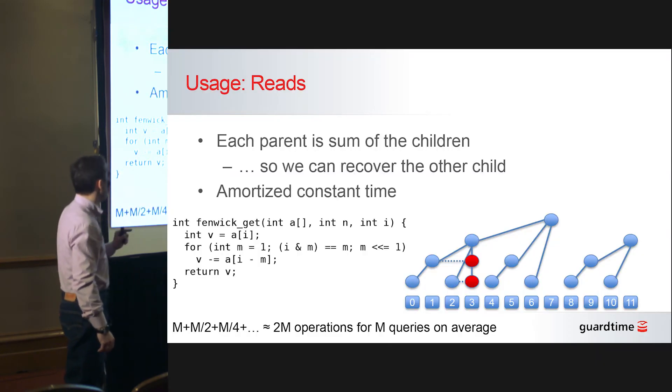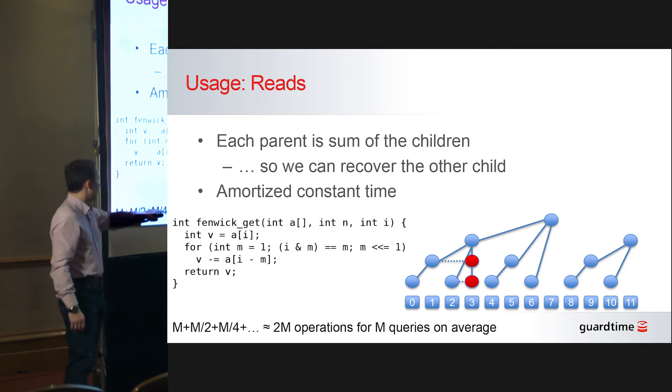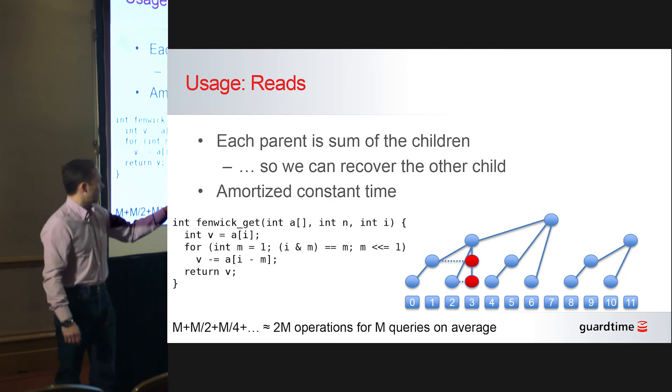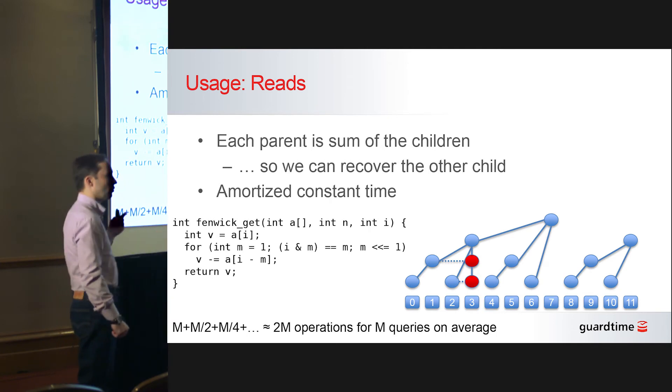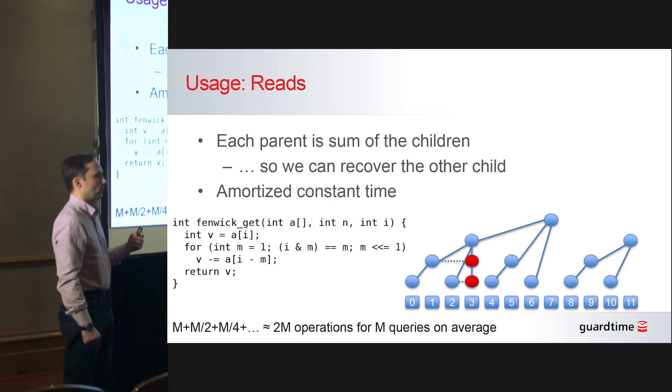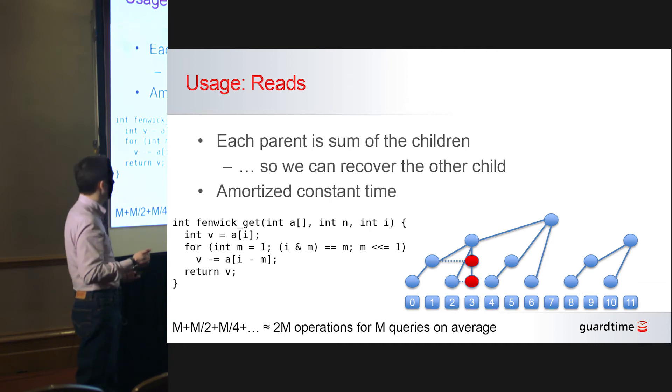Which means that the time complexity of it also is the same thing in reverse. If you do m uniformly distributed queries across this array, then the average cost is two operations per query. So reading back individual elements does not have any exponential or anything like that slowdown. So that's also pretty neat.